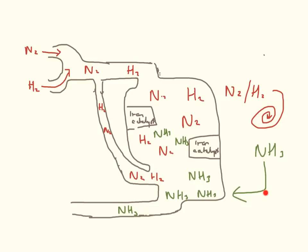So ammonia is made and then taken off at the bottom. The hydrogen and nitrogen go round and round and round until they finish reacting.